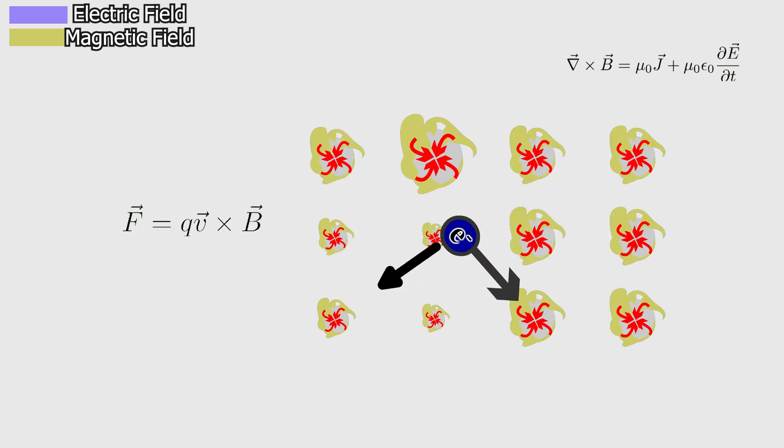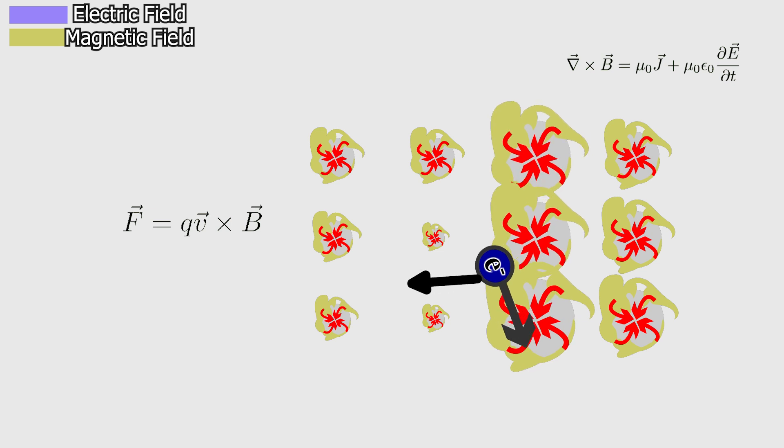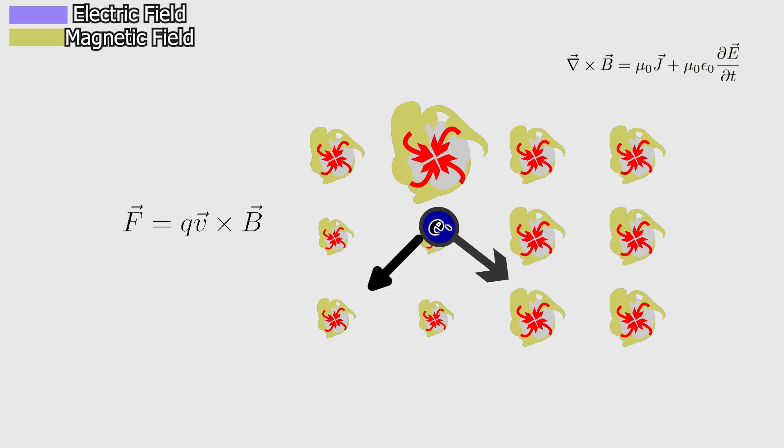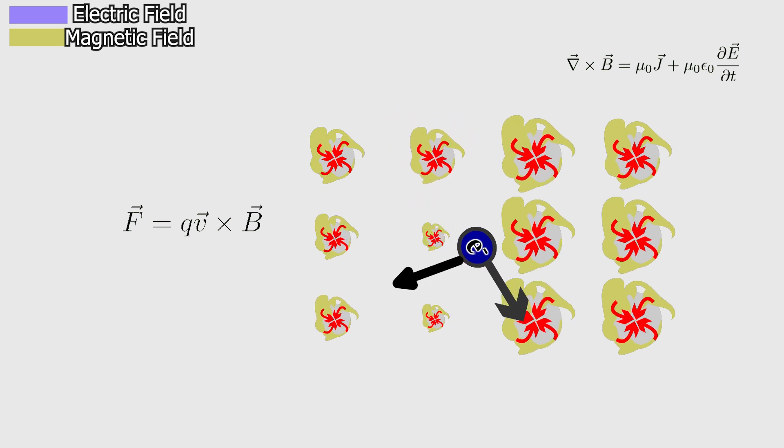This alignment tendency creates a torque on the charged particle. Torque attempts to align the particle's magnetic moment with the external magnetic field. As a result, the particle's motion is influenced.